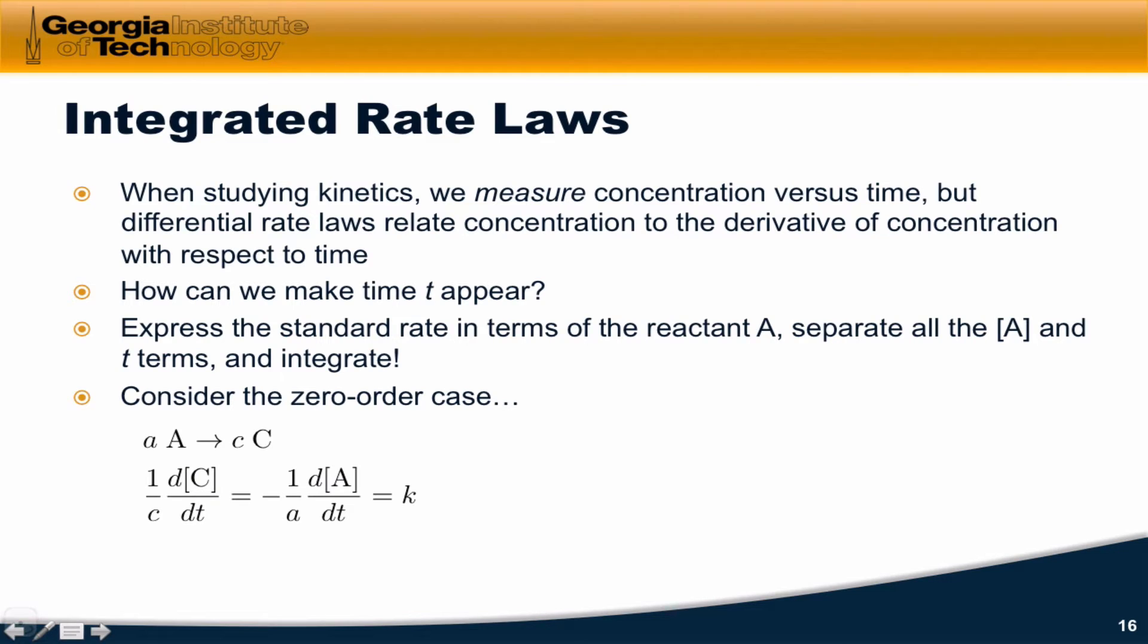So consider the zero order case. When looking at the zero order case originally, we expressed the rate as 1 over c dc dt, or dx dt. This is the standard rate either in terms of c, a product, or x, the number of reaction events. To make this integration process work well, we want to express everything in terms of the concentration of one of the reactants, which is also going to appear over on the right hand side in the general case when the order is not zero.